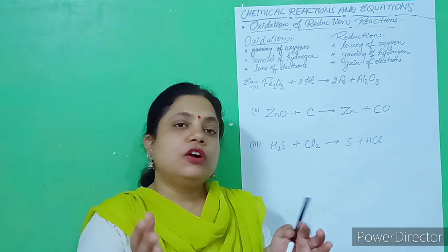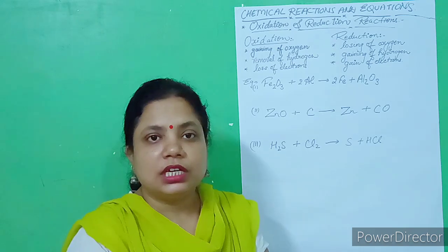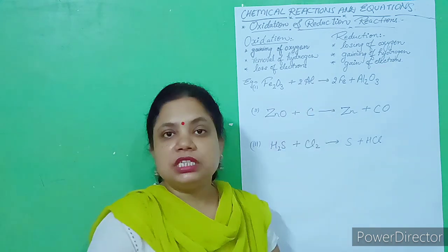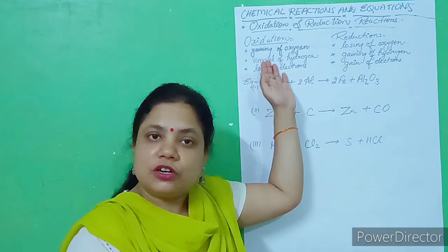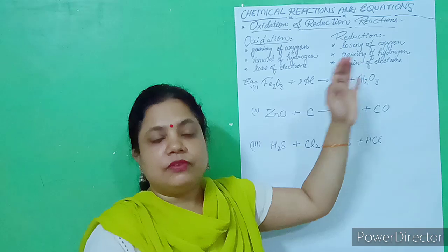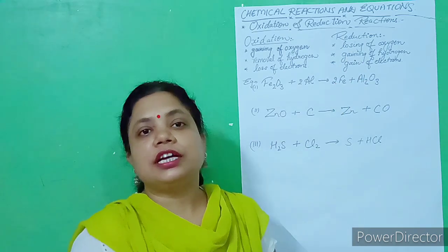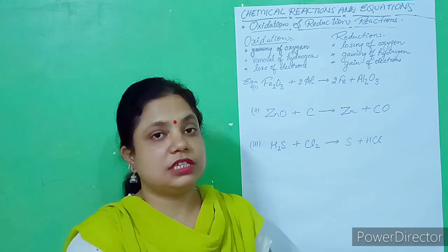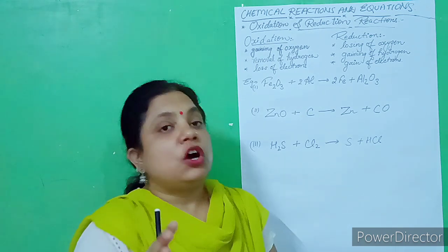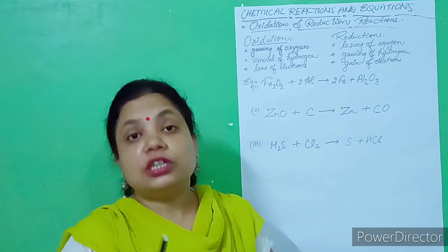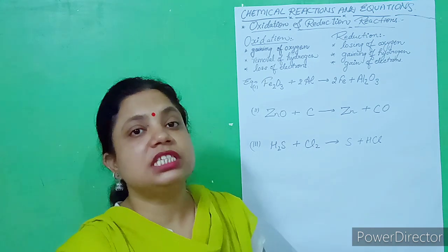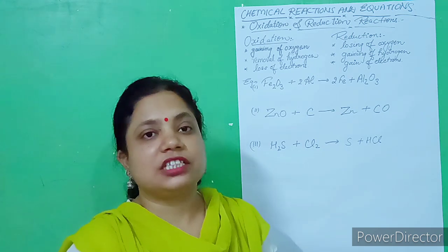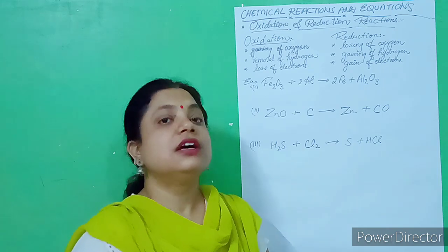Oxidation means where oxygen is gained, where hydrogen is removed, and where electrons are lost. Reduction reaction is just the opposite of oxidation: losing of oxygen, gaining of hydrogen, and gain of electrons — also an electronic-based concept. Both reactions occur together because if one substance removes oxygen, another substance gains it, and this is known as a redox reaction.